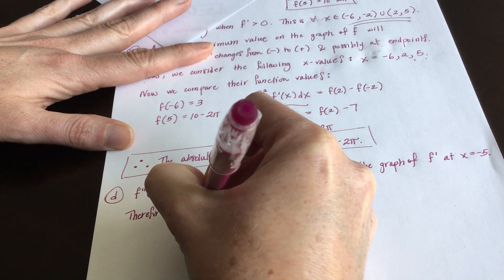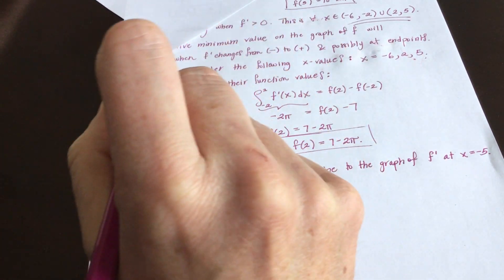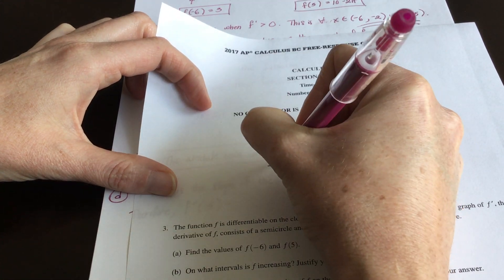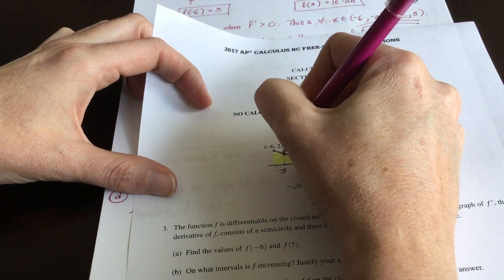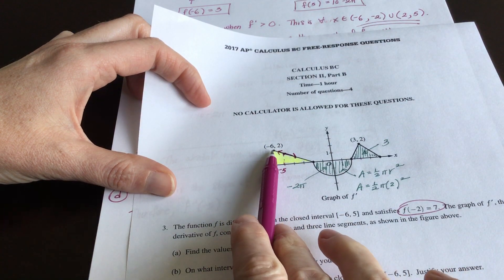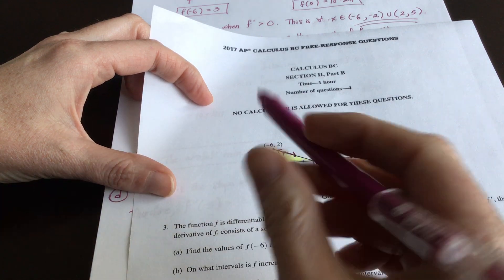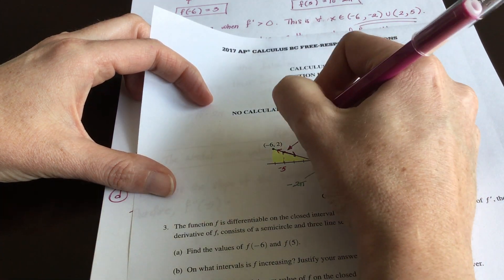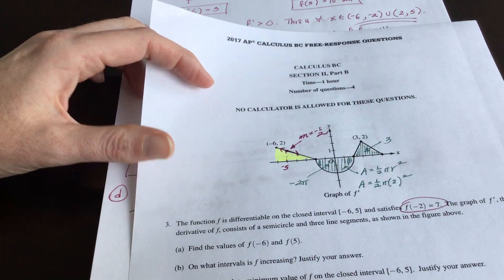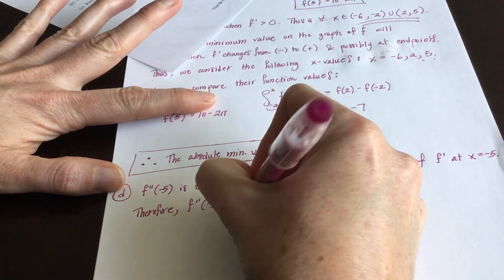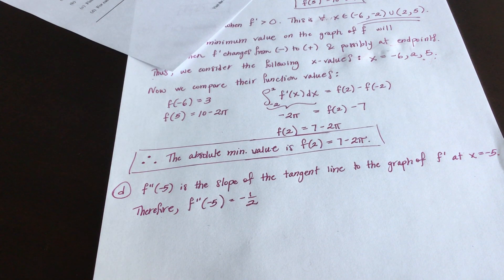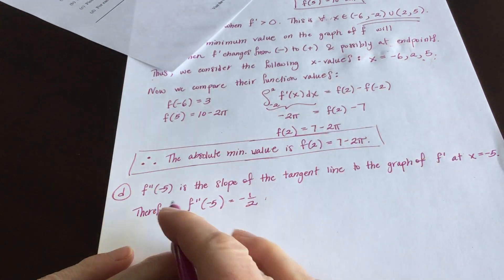At x equals negative five, we're on a line segment — a line is its own tangent line — so we just need the slope of that segment. It goes down two over four to the right, so the slope is negative one half. Therefore f double prime of negative five equals negative one half.